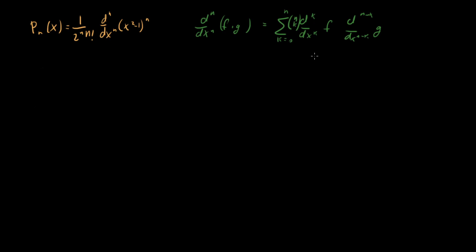How does it apply here? It applies because we can write the definition as d^n/dx^n of (x²-1)^n, and instead of writing x²-1, we can factor it as (x-1)^n times (x+1)^n. Now we have exactly something that looks like an nth derivative of a product, so we can apply the general Leibniz rule and see what happens.